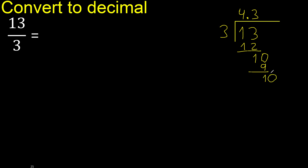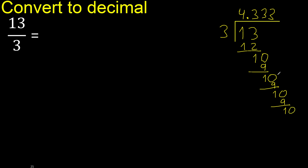Always complete with 0 again — the decimal point is here. Bring down 0, making 10 again. 3 multiplied by 3 is 9. Subtract: 10 minus 9 is 1. The subtraction is complete, and we get 10 once more.